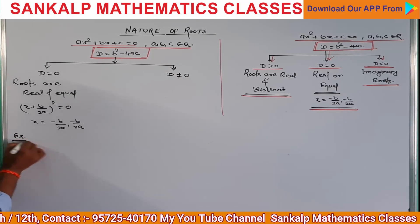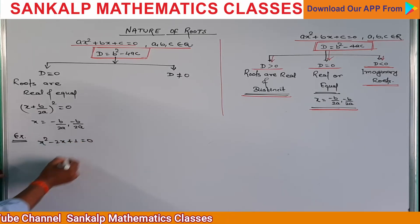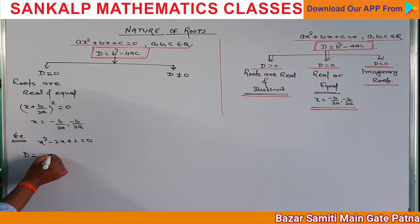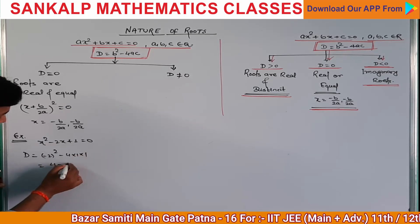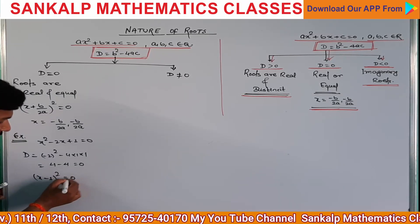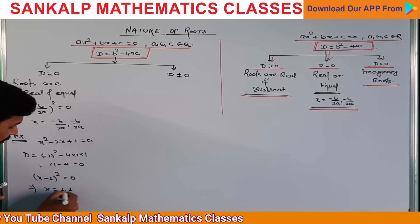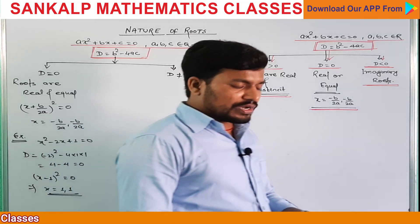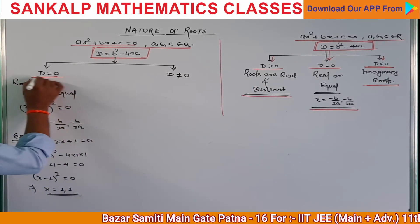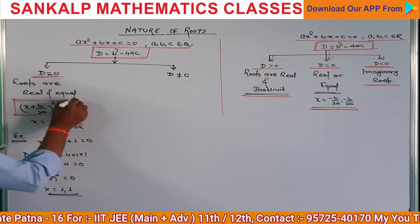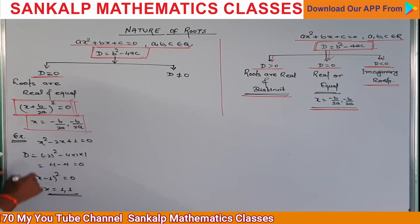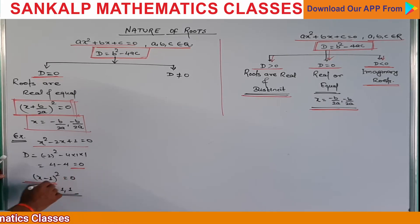D = 0 का एक example: x² - 2x + 1 = 0। D = b² - 4ac = 4 - 4 = 0 आ गया। आप देखो — यह (x-1)² है। तो x = 1 दो बार मिलेगा। D = 0 में roots real and equal बनेगा, expression whole square में बनेगा।